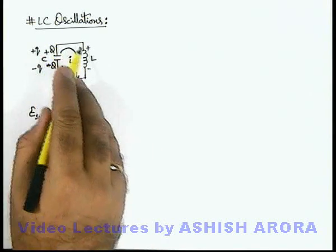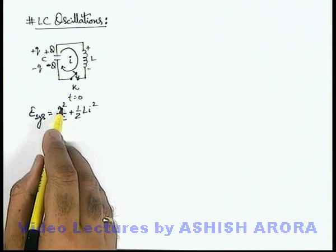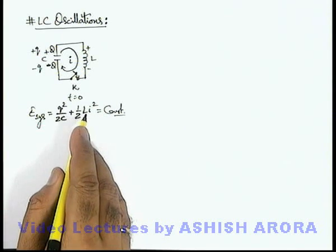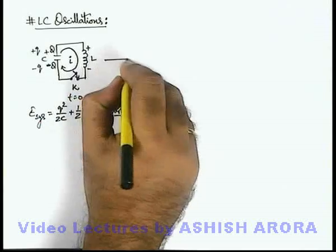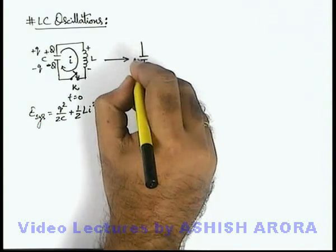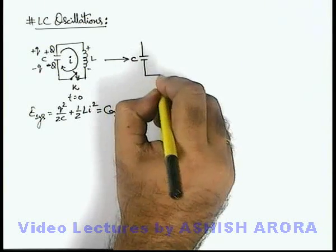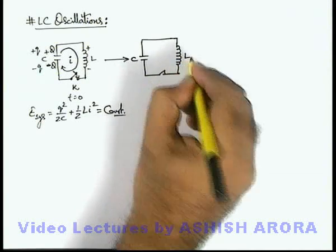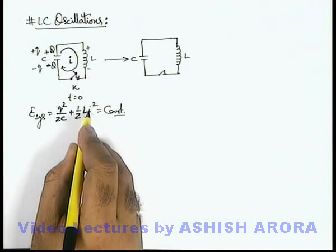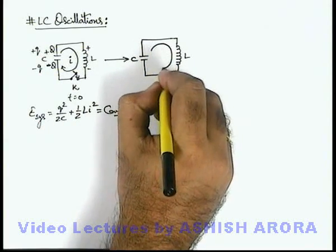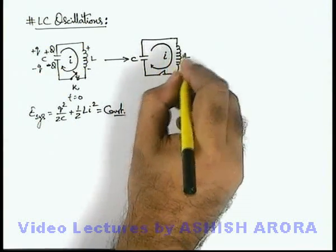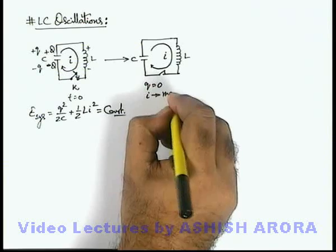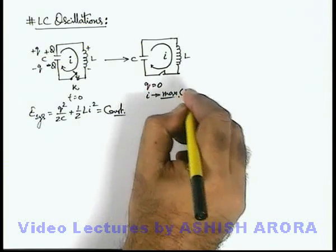As the capacitor discharges through the inductor, the value of q decreases. Since total energy is constant, the current in the circuit increases correspondingly. After some time, the charge on the capacitor becomes zero, and at that moment the current in the circuit will be maximum — because all the energy is now in the form of magnetic energy. This maximum current is denoted as I₀.